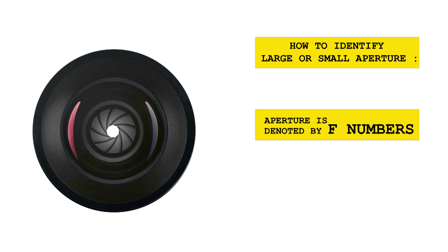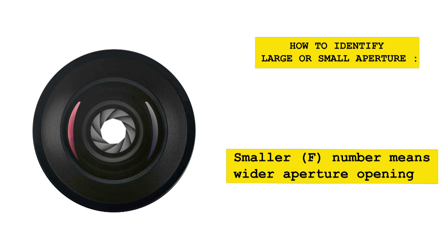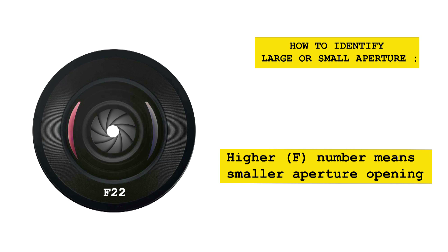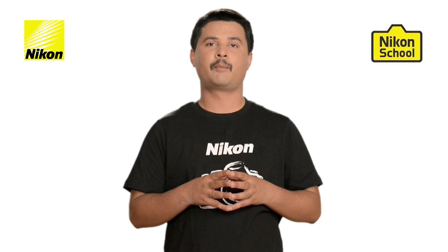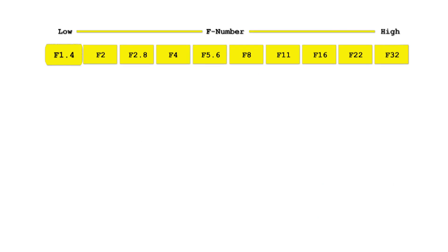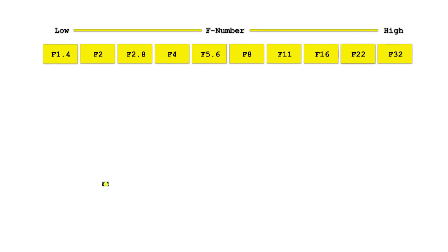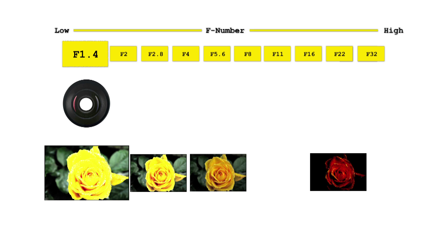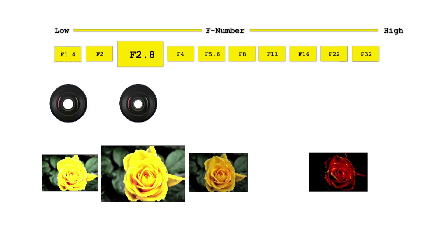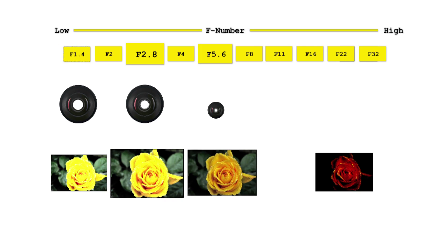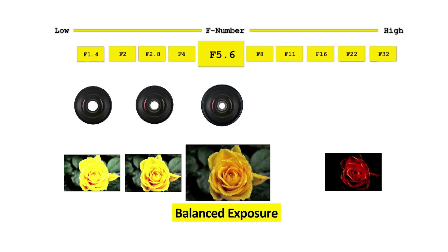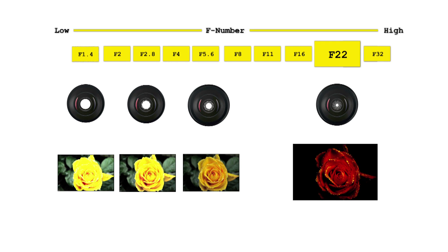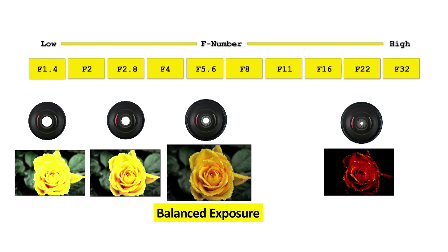How do you identify small or wider aperture? Aperture is denoted by F number. A smaller F number means wider aperture; a greater F number means smaller aperture. Referring to this chart, we have various F numbers from F1.4 to F22. The image shot at F1.4 is overexposed because this F number was too wide for the given lighting situation. As we increase to F2.8, the outcome is better but still overexposed. Continuing to increase the F number makes the aperture smaller and smaller — F5.6 gives a balanced exposed image. Increasing the F number further gives a darker output. Depending on the lighting situation, you decide what F number to use.